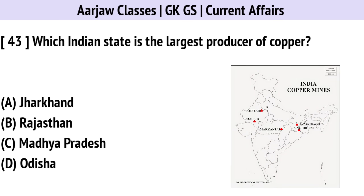Which Indian state is the largest producer of copper? Correct option is C — Madhya Pradesh.